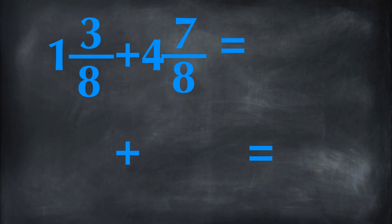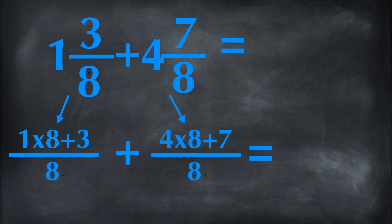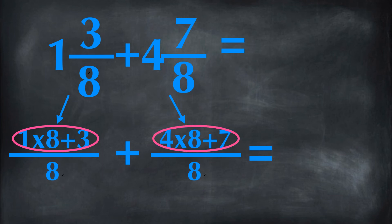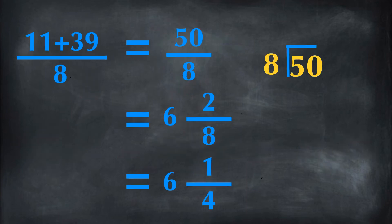We can also write the mixed numbers as improper fractions, then add. 1 and 3 eighths equals 1 times 8 plus 3 over 8. And 4 and 7 eighths equals 4 times 8 plus 7 over 8. This gives us 11 over 8 plus 39 over 8.